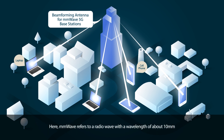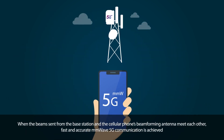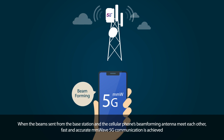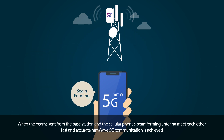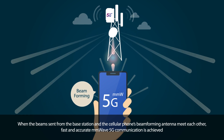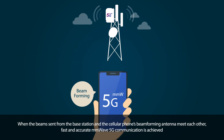Here, millimeter wave refers to a radio wave with a wavelength of about 10 millimeters. When the beam sent from the base station and the cellular phone's beamforming antenna meet each other, fast and accurate millimeter wave 5G communication is achieved.